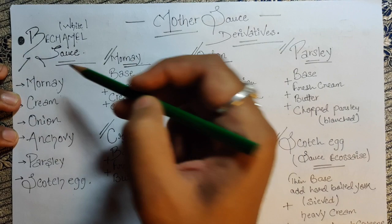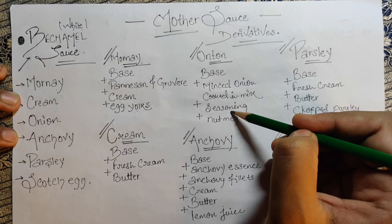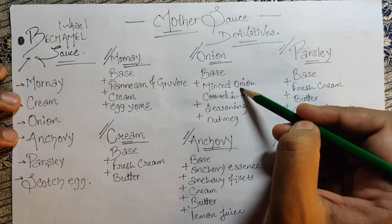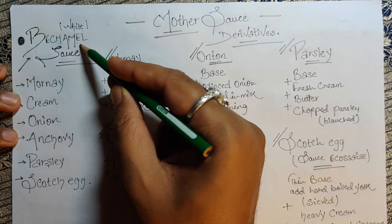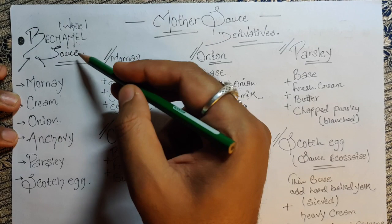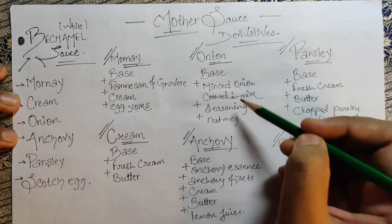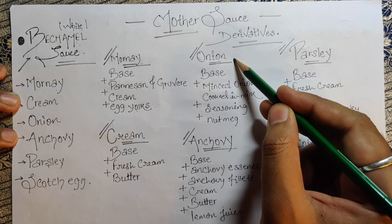For onion sauce: the base is béchamel. Then add minced onion cooked in milk. We are flavoring the milk with onion to get the onion flavor — just as we flavor milk in the béchamel process. Then season with salt and pepper, add nutmeg for a nutty flavor, and your onion sauce is ready.